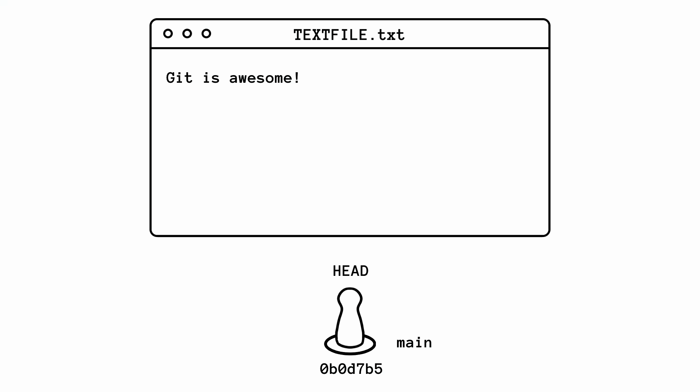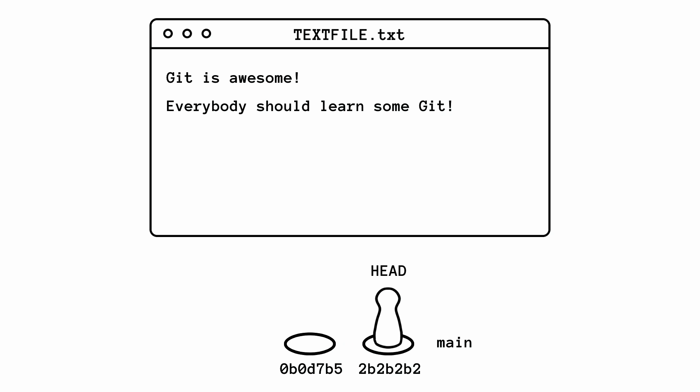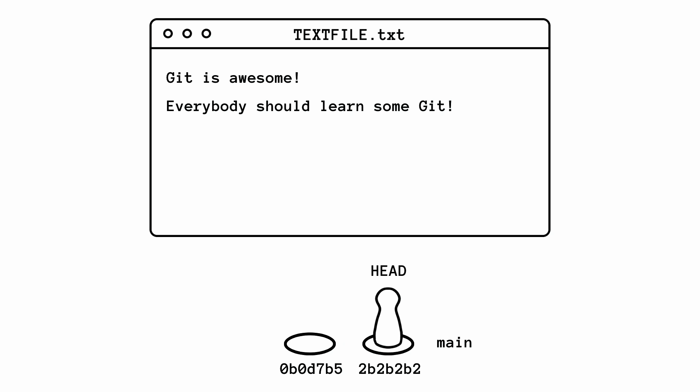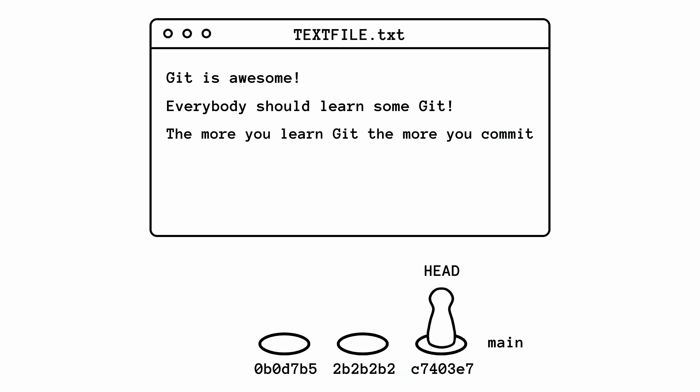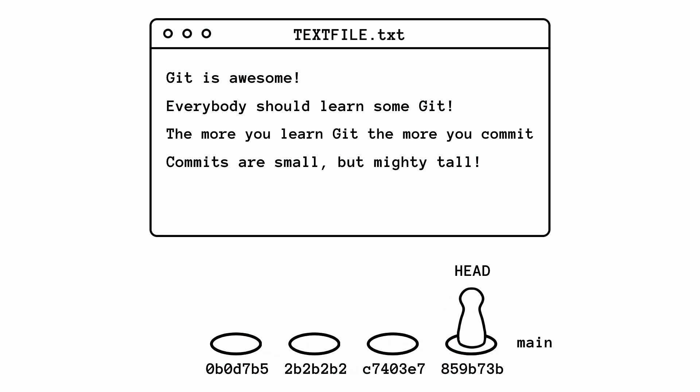For example, let's say you have a project. This project has one file called text file dot txt. It doesn't really matter what's in it — it can be some Python or JavaScript code or some markdown. In the end it's all text. You start adding content to this file, you add a line, you commit the changes to git, and then you do it a few more times.